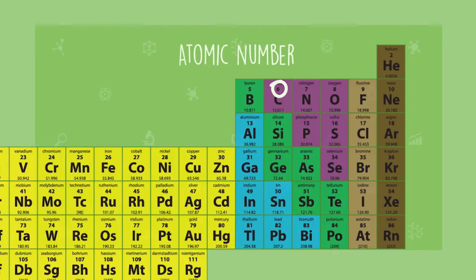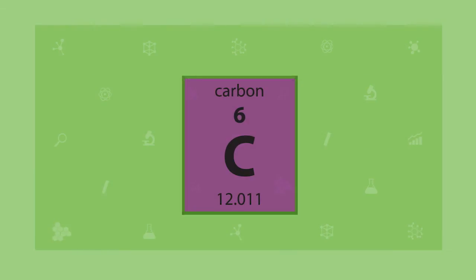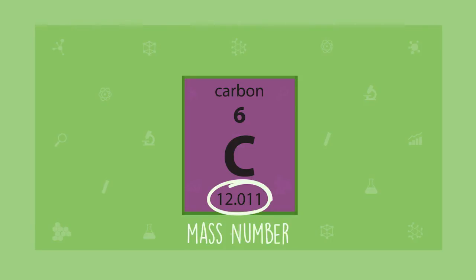There are other numbers and letters on the periodic table too. Let's take a closer look at these using carbon as an example. The second number in each element's box is called the mass number. This number corresponds to the element's average mass in nature, which is the mass of the protons plus the neutrons in that element. Electrons weigh so little that their mass isn't counted.